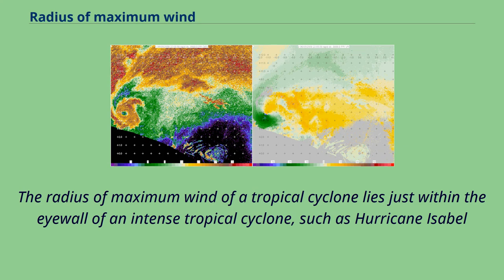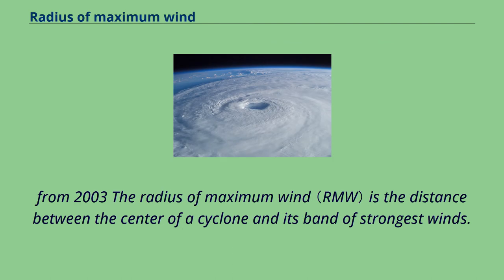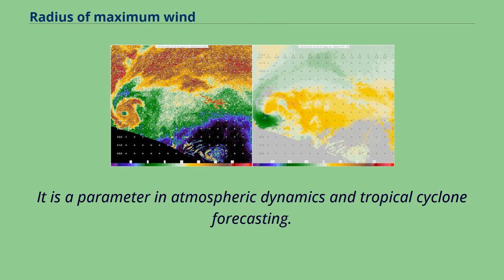The radius of maximum wind of a tropical cyclone lies just within the eye wall of an intense tropical cyclone, such as Hurricane Isabel. The radius of maximum wind is the distance between the center of a cyclone and its band of strongest winds. It is a parameter in atmospheric dynamics and tropical cyclone forecasting.